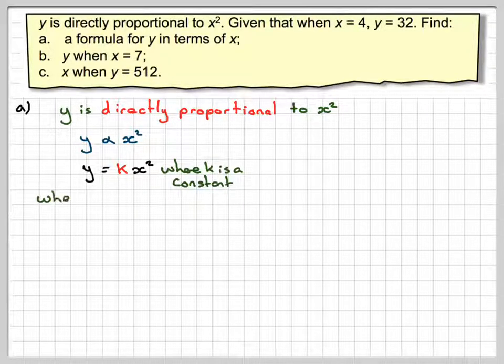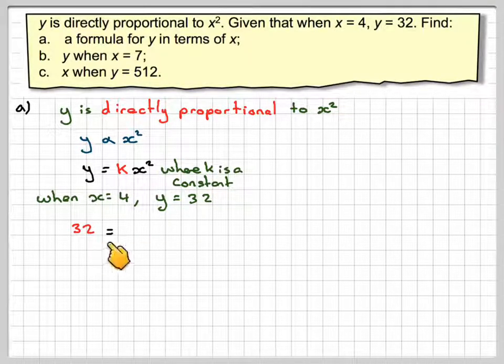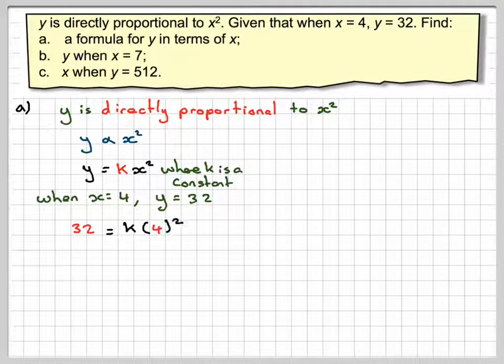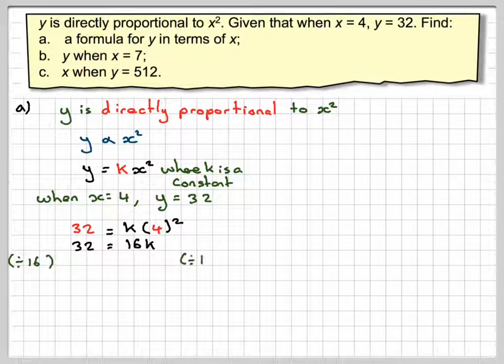Where K is a constant, when X is equal to 4, Y is equal to 32. Substituting in, we get 32 is equal to K times 4 squared. Now 4 squared is 16, so we get 32 is equal to 16K, and therefore if we divide both sides by 16, we're going to get that K is equal to 2.